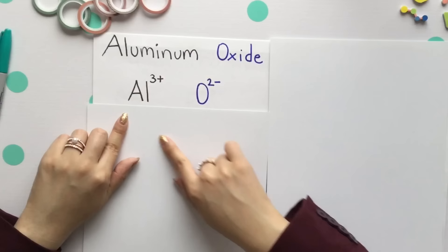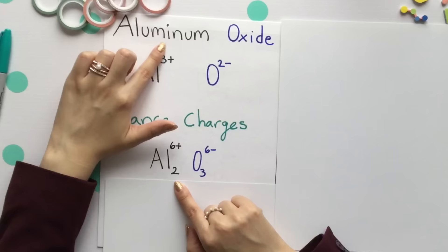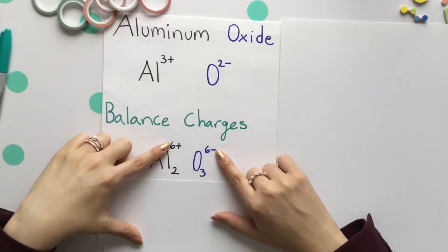Aluminum had that 3+ charge and oxygen had the 2-. Let's balance these charges out by placing a subscript of 2 on aluminum. That 2 multiplies with our 3+ charge and becomes a 6+ charge.